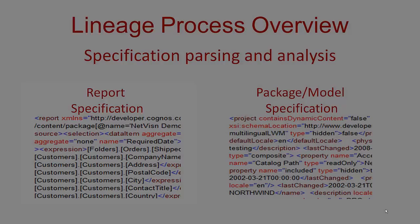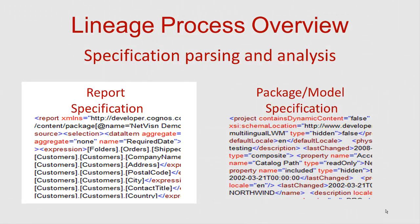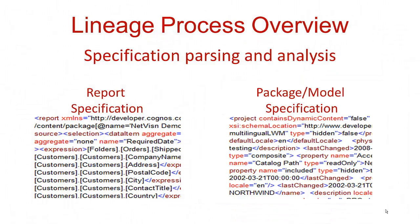To generate lineage for a report, NetVision reads the specifications for both the report and the published package model from the content store. These are then parsed to determine all the calculations and model references that are required to successfully run the report. Let's take a look at a simple report in NetVision to see how this lineage is documented.